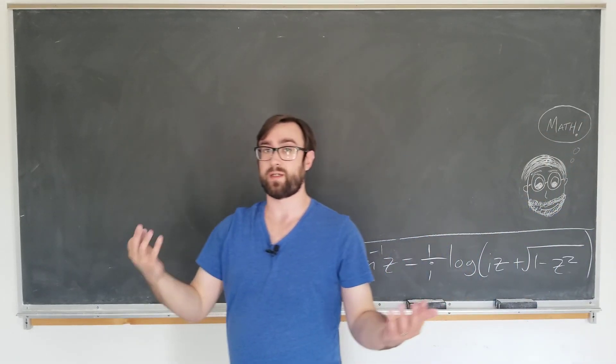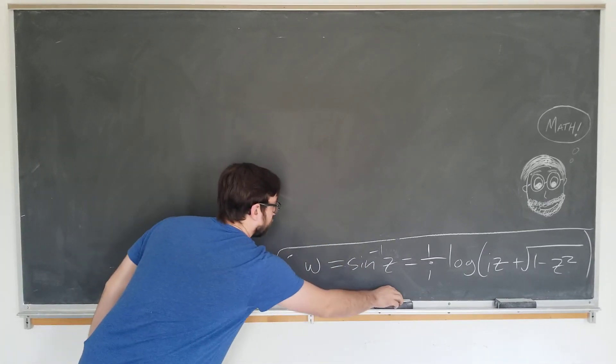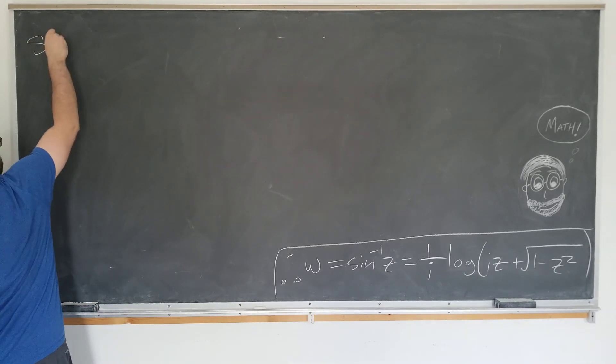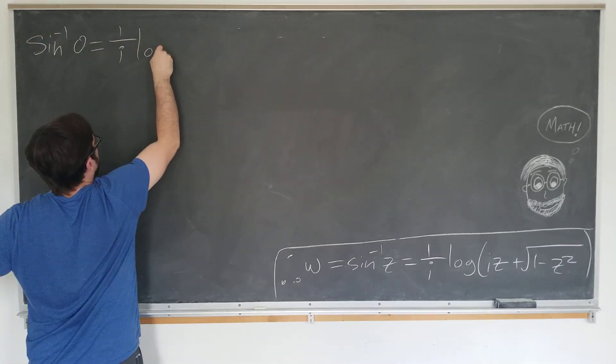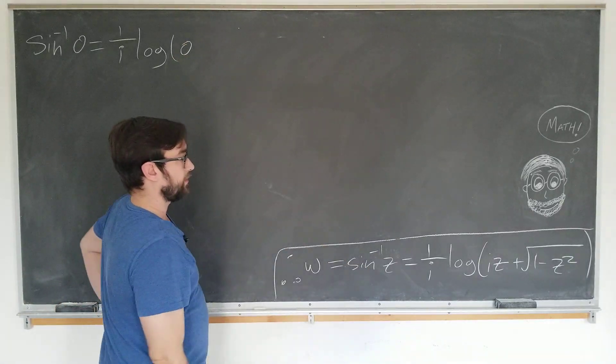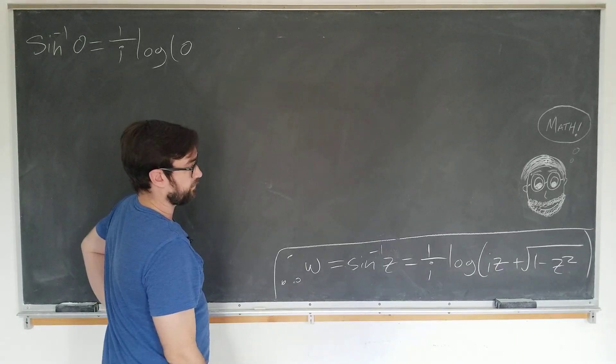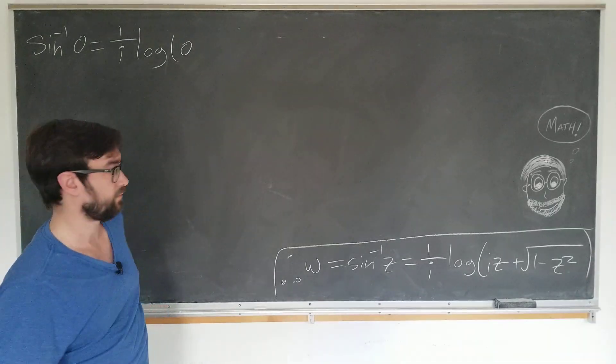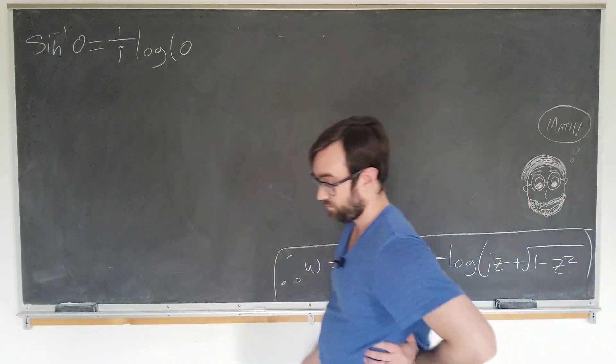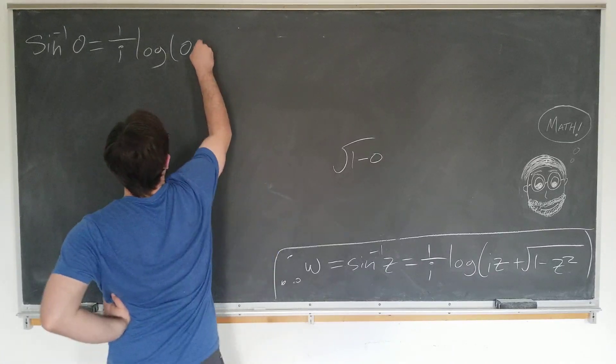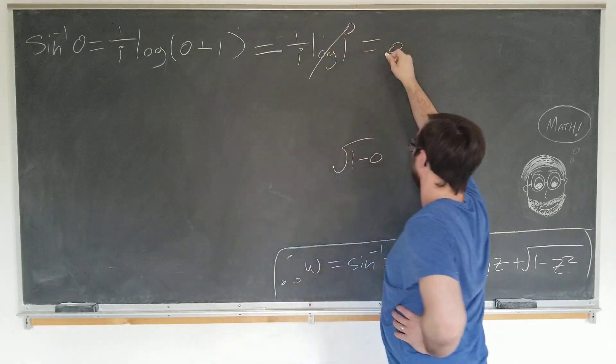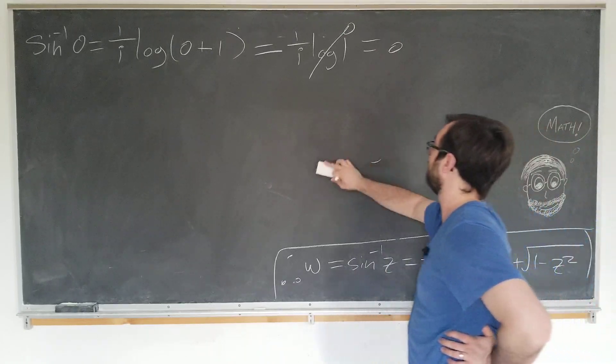Alright, so the simplest value we can plug in here is z equals 0. So let's go ahead and do that. This formula tells us that the inverse sine of 0 is 1 over i natural log of i times 0 plus the square root of 1. The square root of 1 minus 0 should be 1. So this becomes 1 over i log 1, which of course is 0. I was trying to get the 1 to go away, but we actually wanted the 1 to stay there.